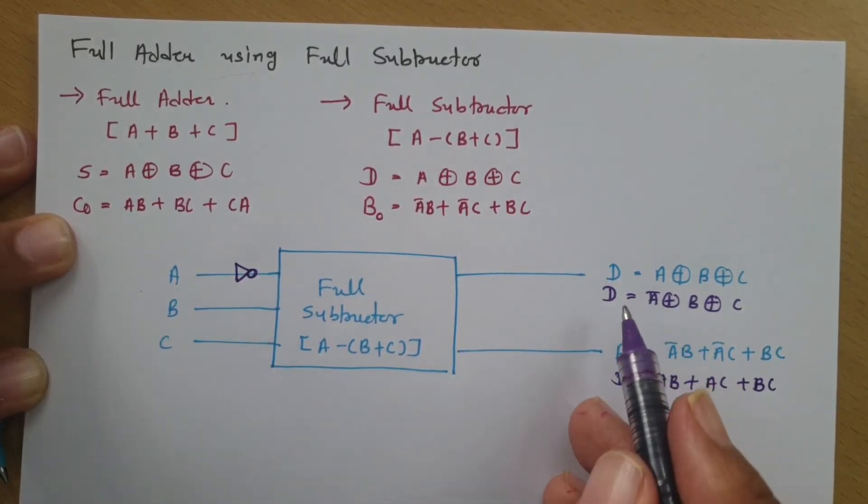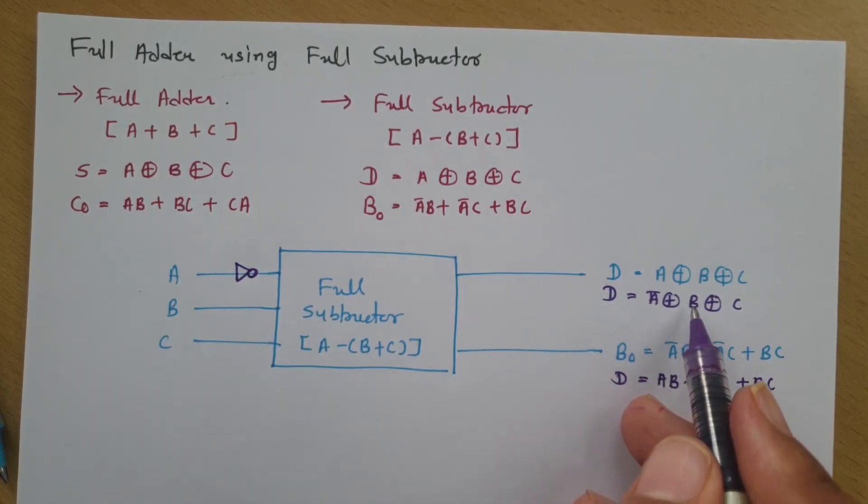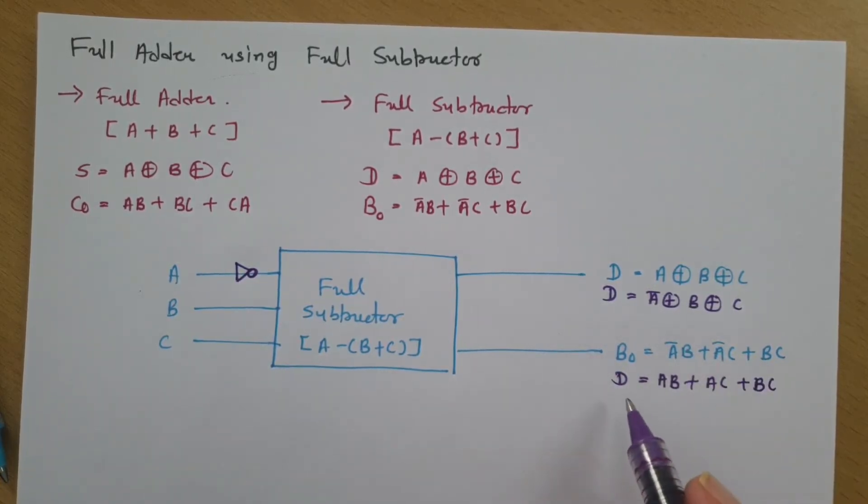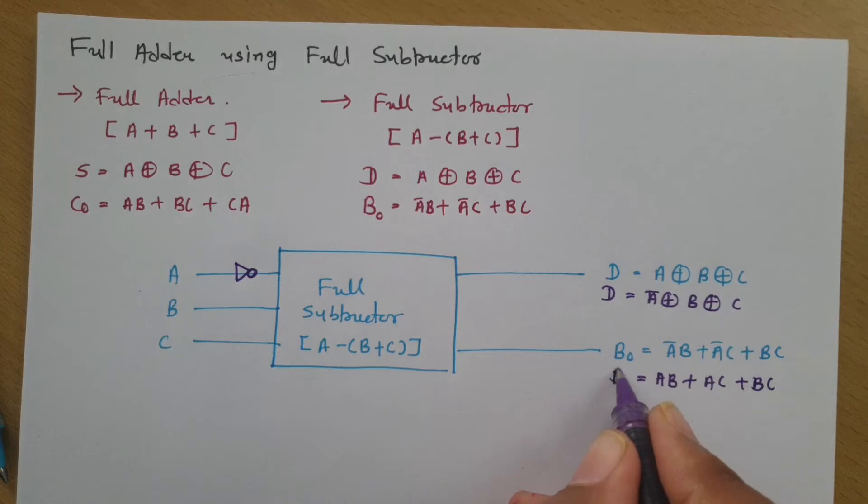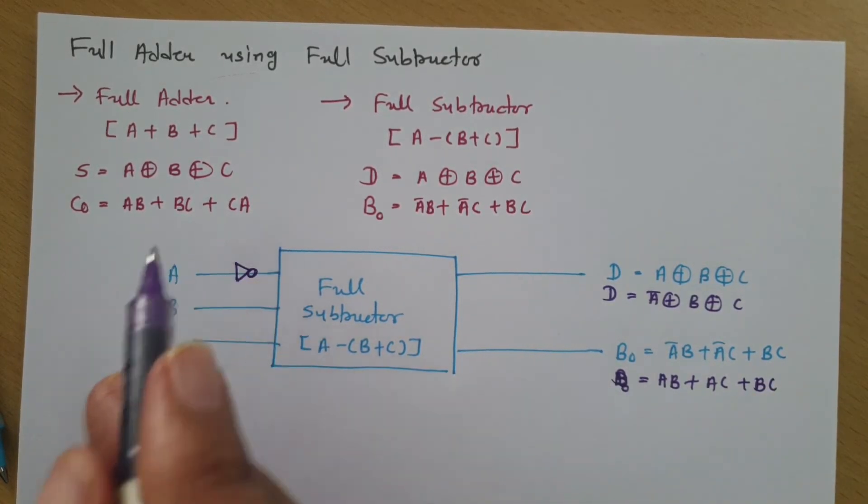So, here if you connect one NOT gate, this difference will get changed. Now, it will be A bar XOR B XOR C. And this borrow, now that will get changed and it will be similar to carry.